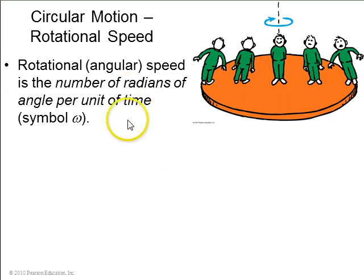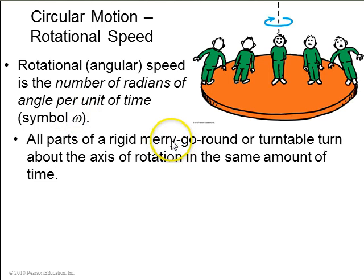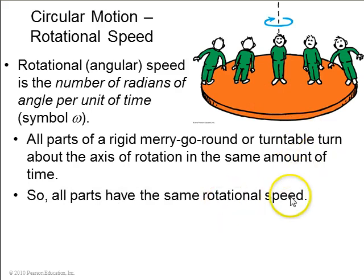So, we measure angular speed in radians per unit time, radians per second, and the symbol for angular speed is a W, which is sort of curved, and it's actually the Greek letter omega. But all parts of a merry-go-round have the same value of omega. So, they all have the same rotational speed or angular speed.